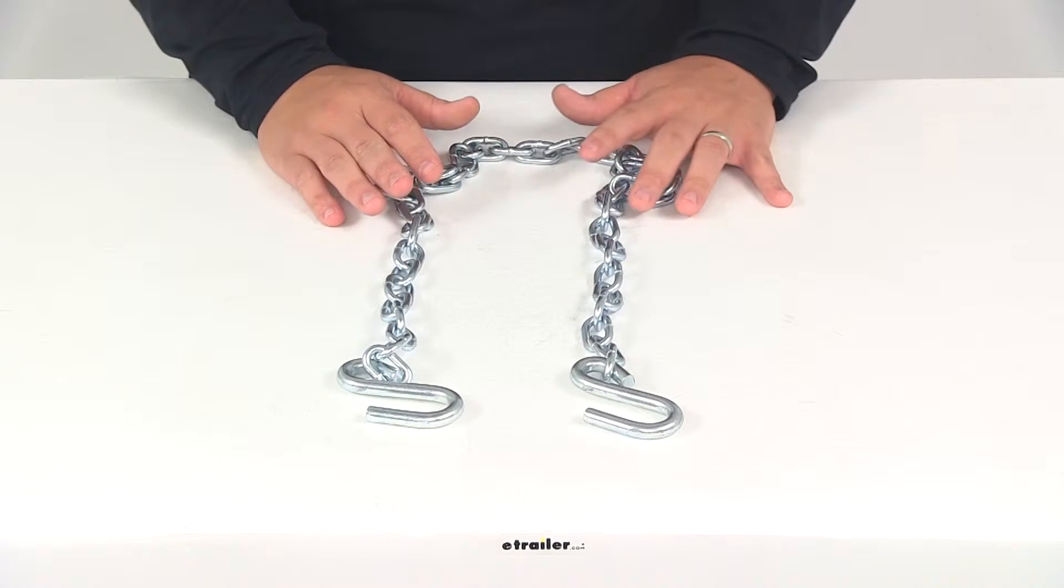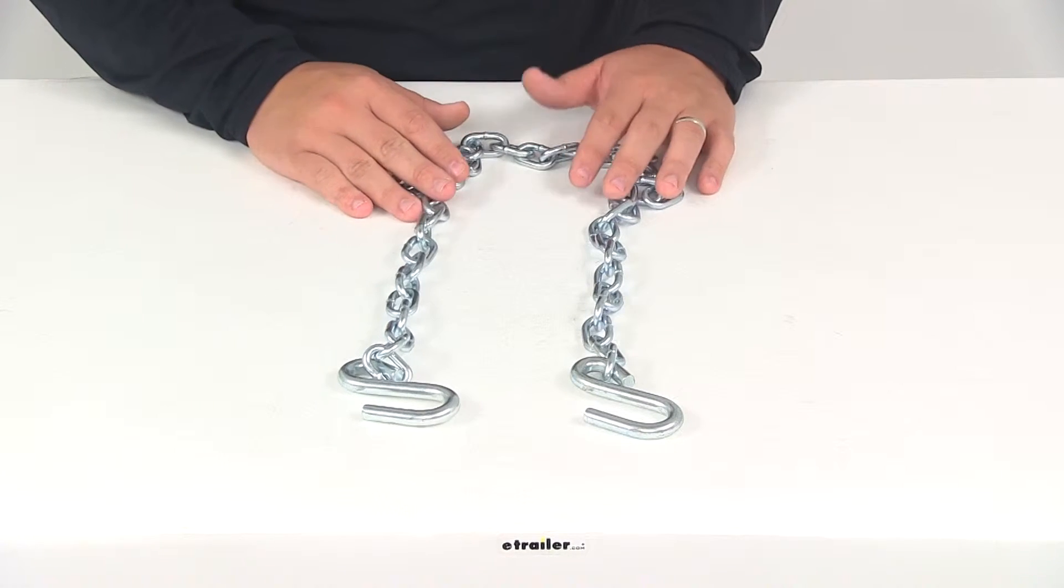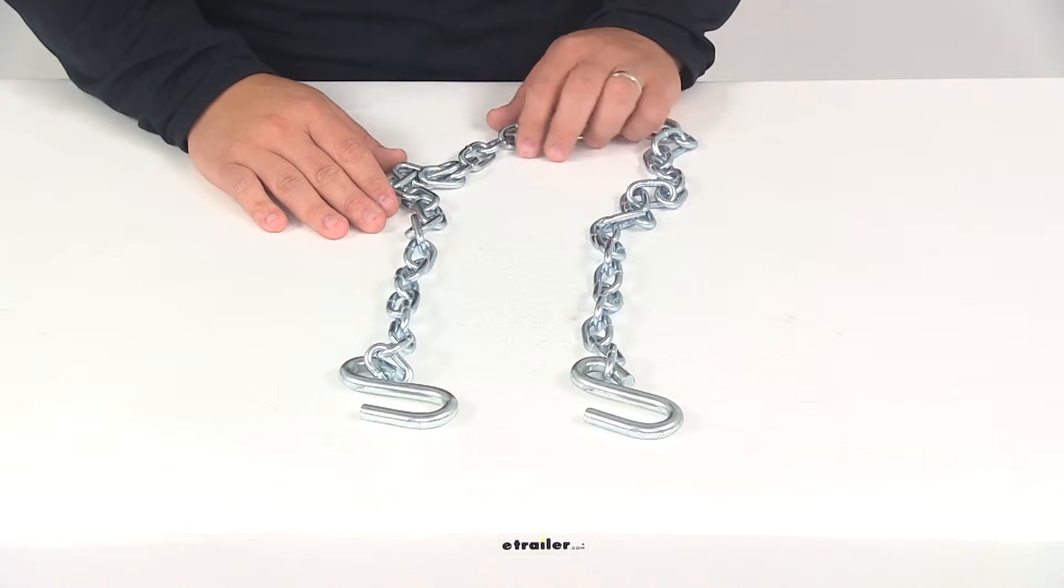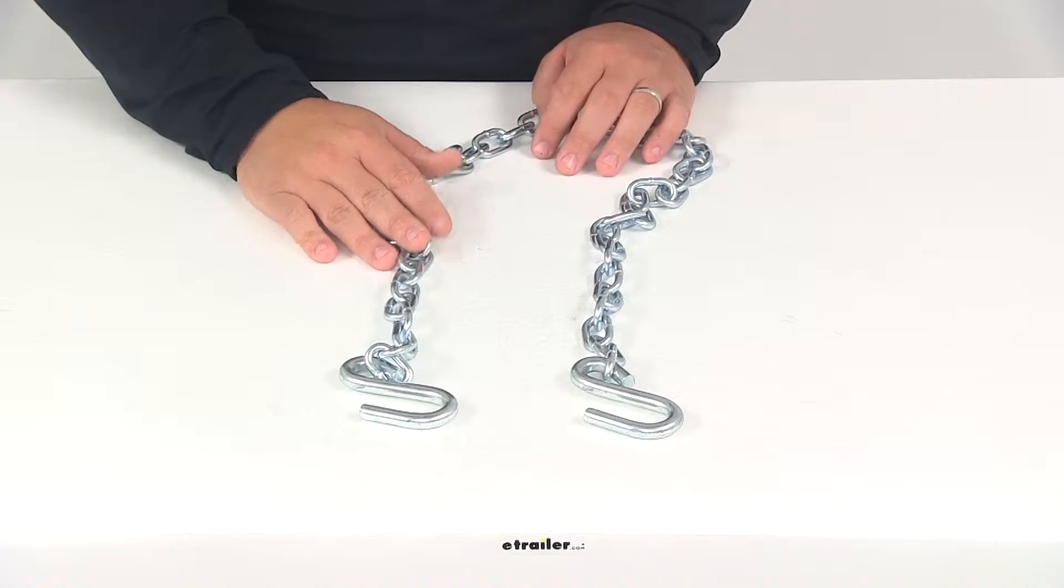Safety chains connect the trailer to the tow vehicle and act as a safety system in the event that the trailer coupler would disconnect or come off of the hitch ball. Safety chains are required in most states.